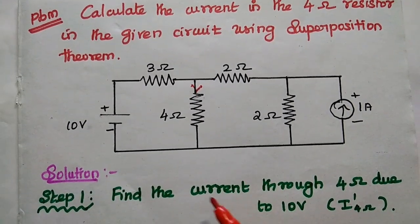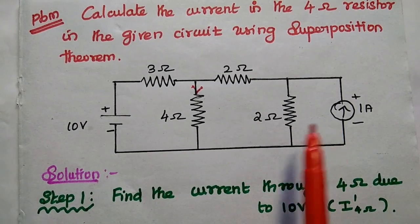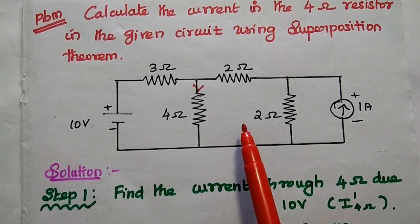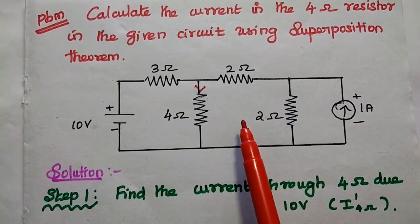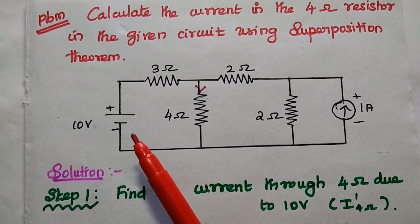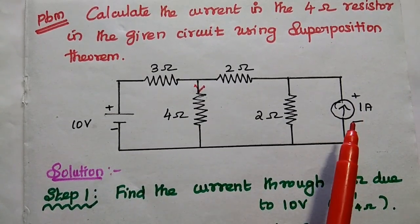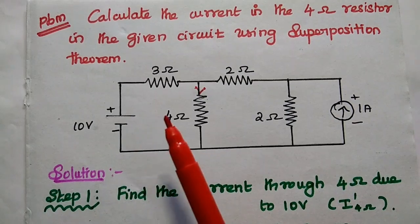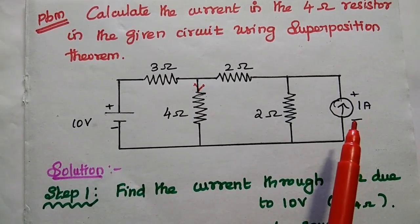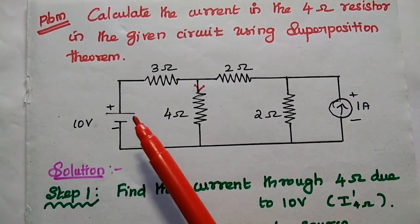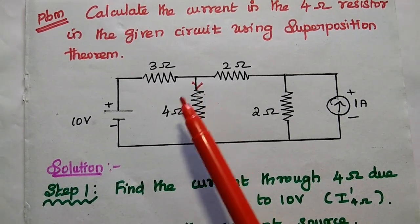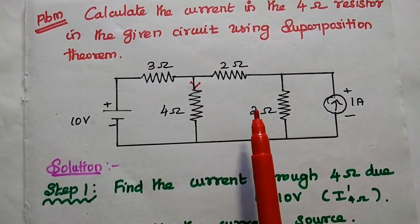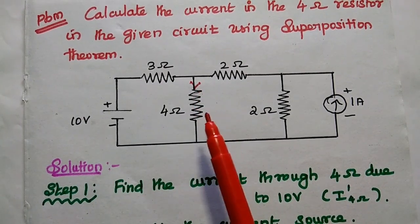This is the given circuit with one voltage source and one current source. We are going to find out the current through this 4 ohm resistor using superposition theorem. In superposition theorem, the first step is to select only one source at a time — here the current source is open circuited — then we find the current through the 4 ohm resistor due to the 10 volt source. In the next step, we consider only the current source while the voltage source is short circuited. Finally, we add these two current values to get the overall current flowing through the 4 ohm resistor.